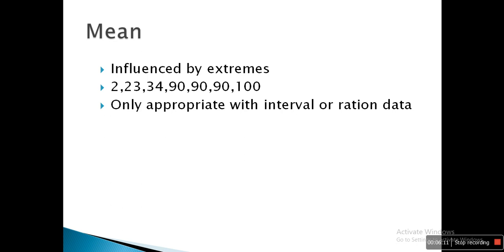The mean is influenced by extreme cases. If an extreme value is too high or too low, the mean will increase or decrease accordingly. For example, the list 2, 23, 34, 90, 90, 90, and 100 has quite high values, so the mean will be quite high — influenced by the outlier 100. We call such values outliers, and they can prevent us from understanding the spread of data. This kind of calculation is most appropriate with interval and ratio data.